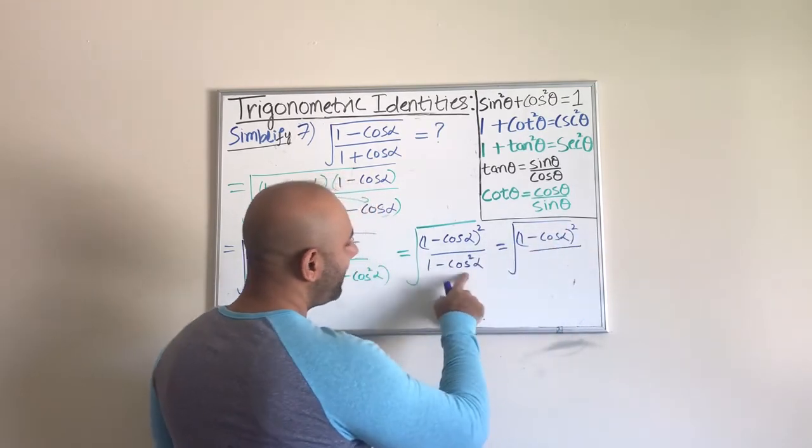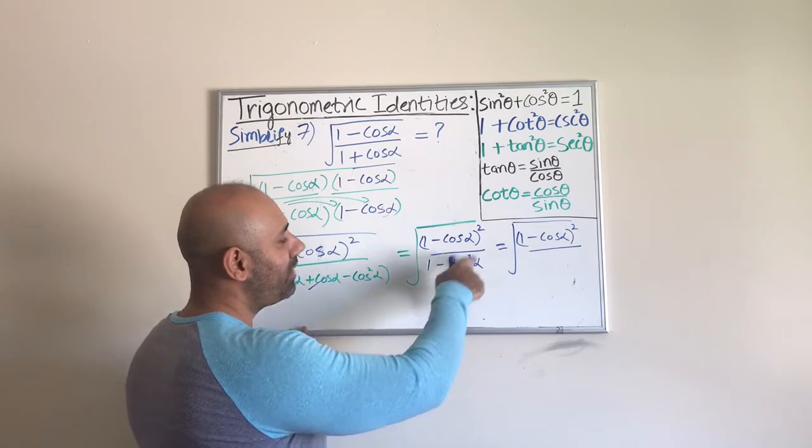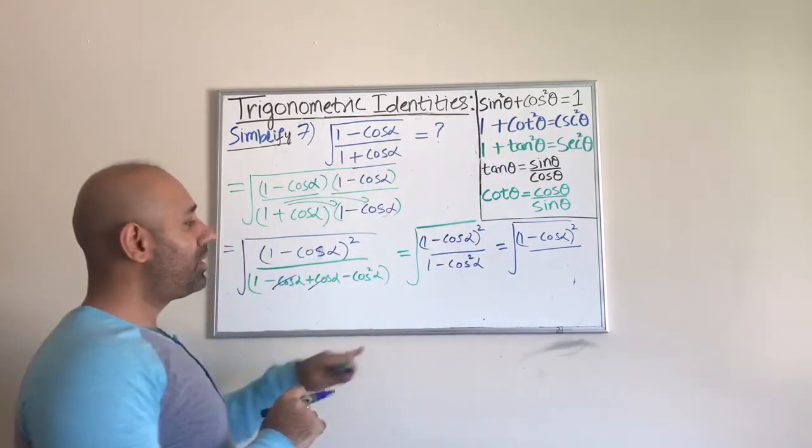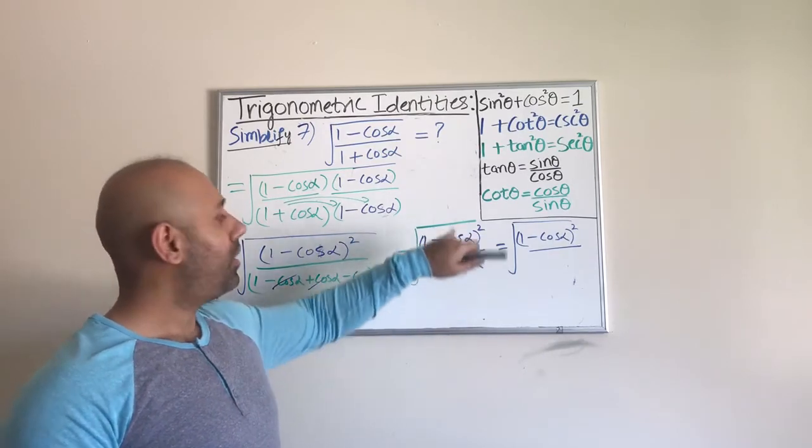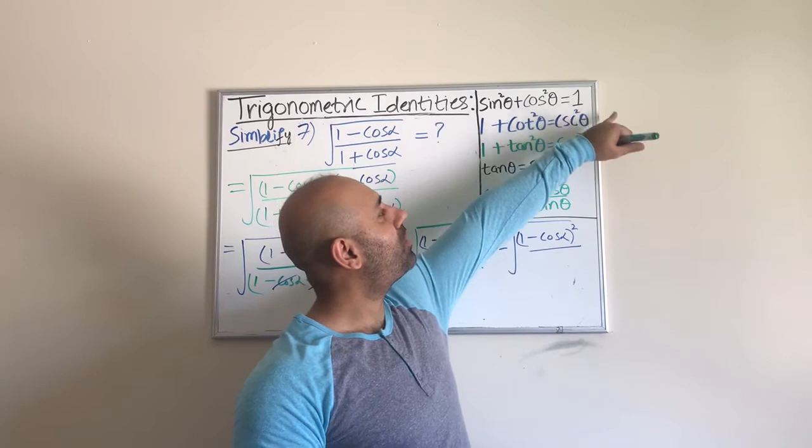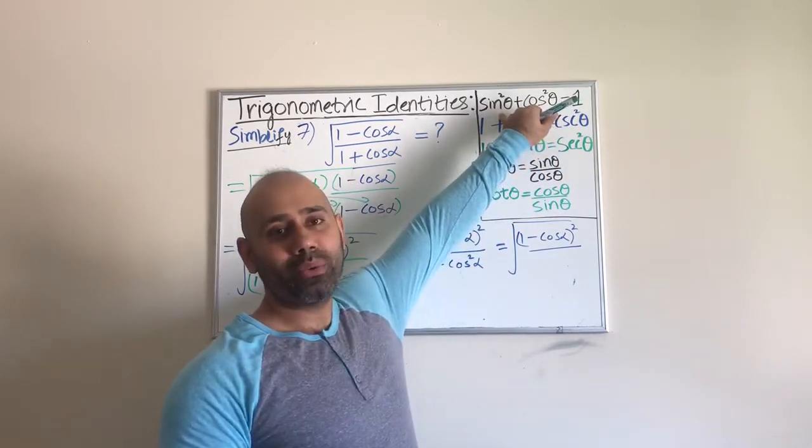Okay, from here I'm going to still put this like 1 minus cosine alpha whole square, but 1 minus cosine squared alpha. So when I look at 1 minus cosine squared alpha, I can see that this number one I can use to simplify this. So if I bring this cosine to the other side, it would be 1 minus cosine squared theta that would equal to just simply sine squared theta, right?